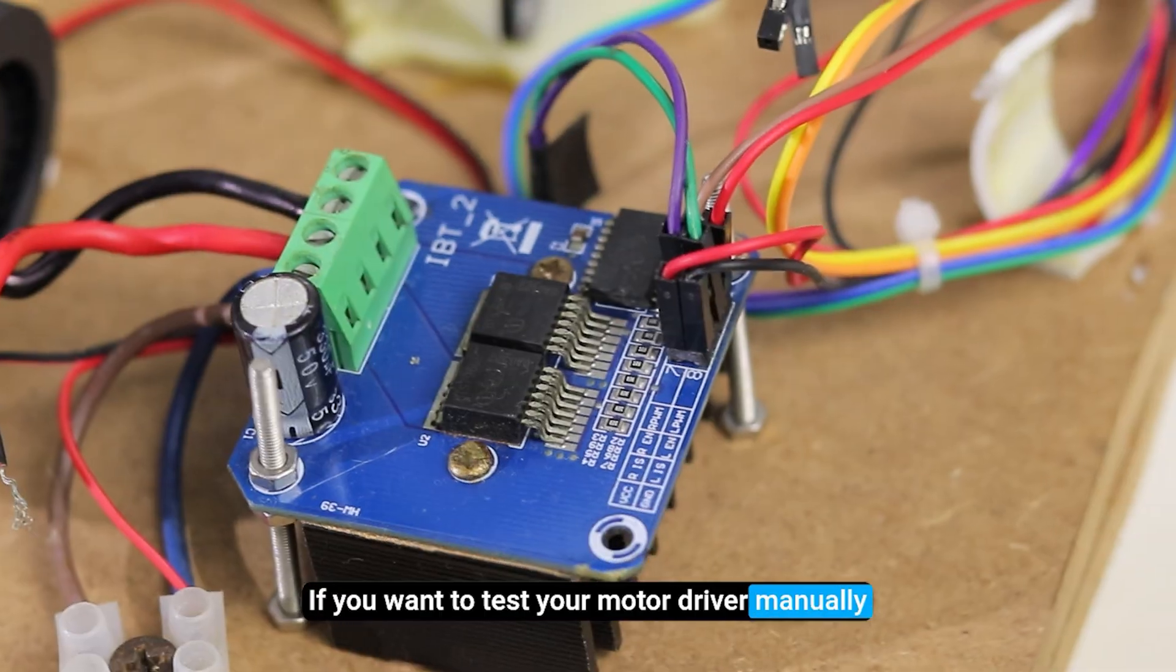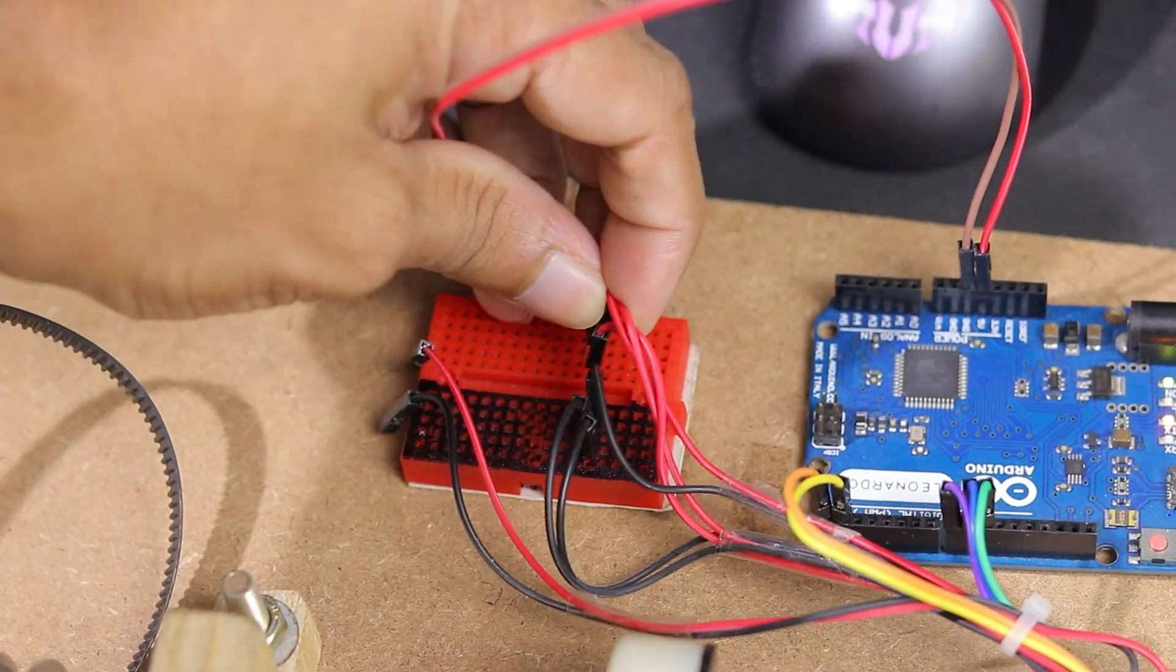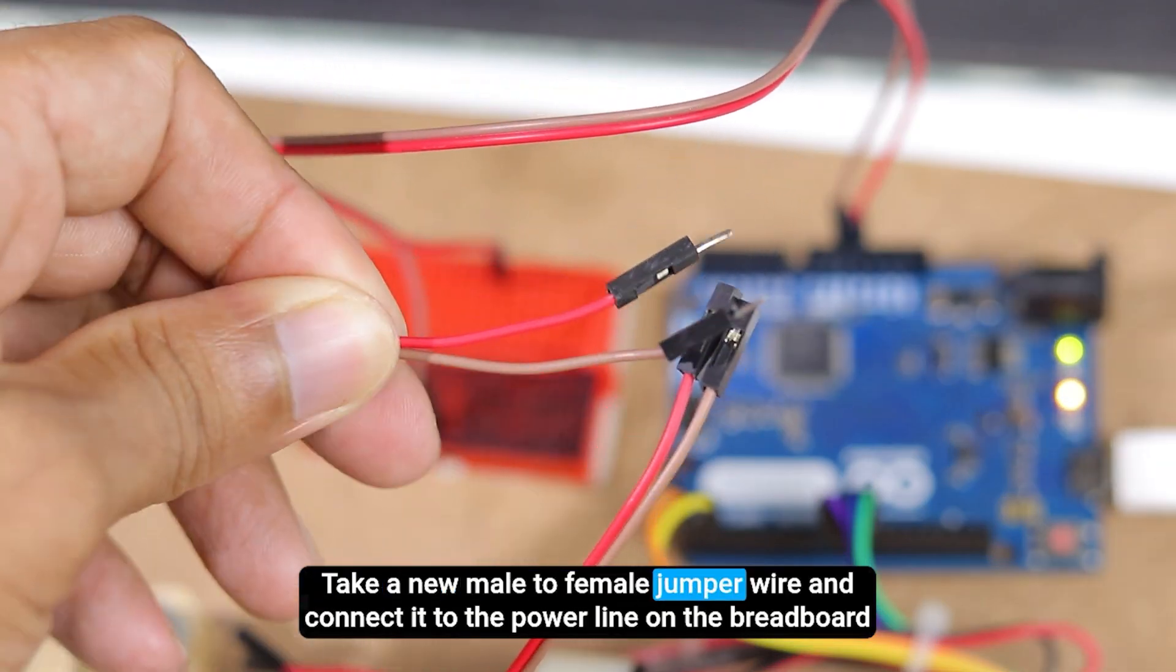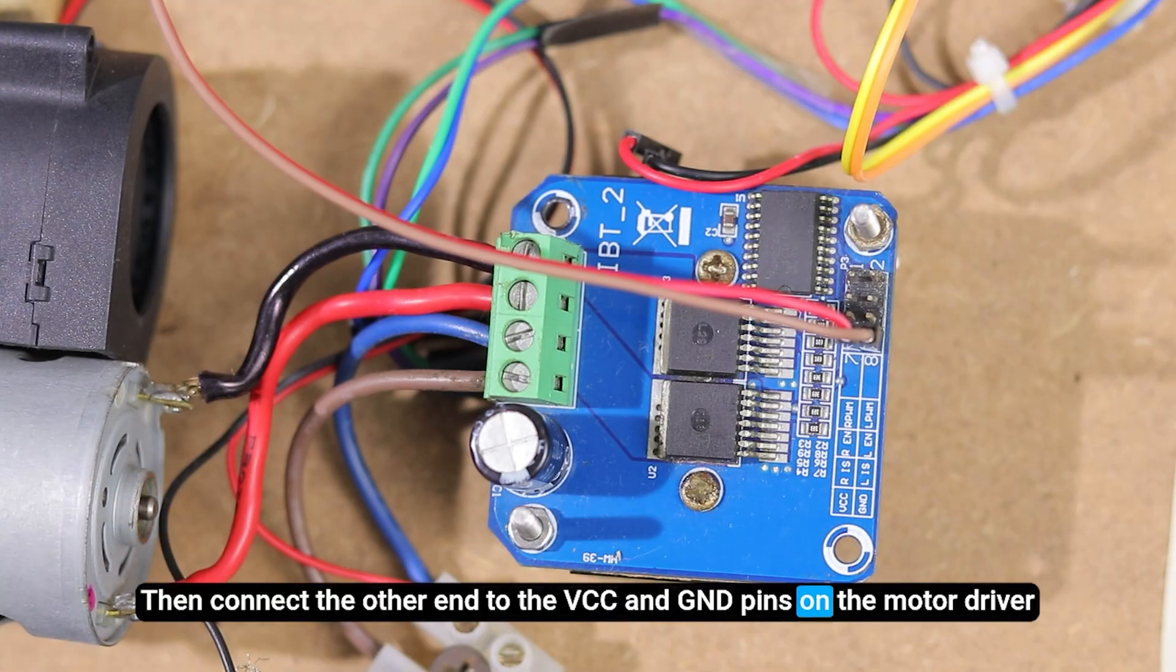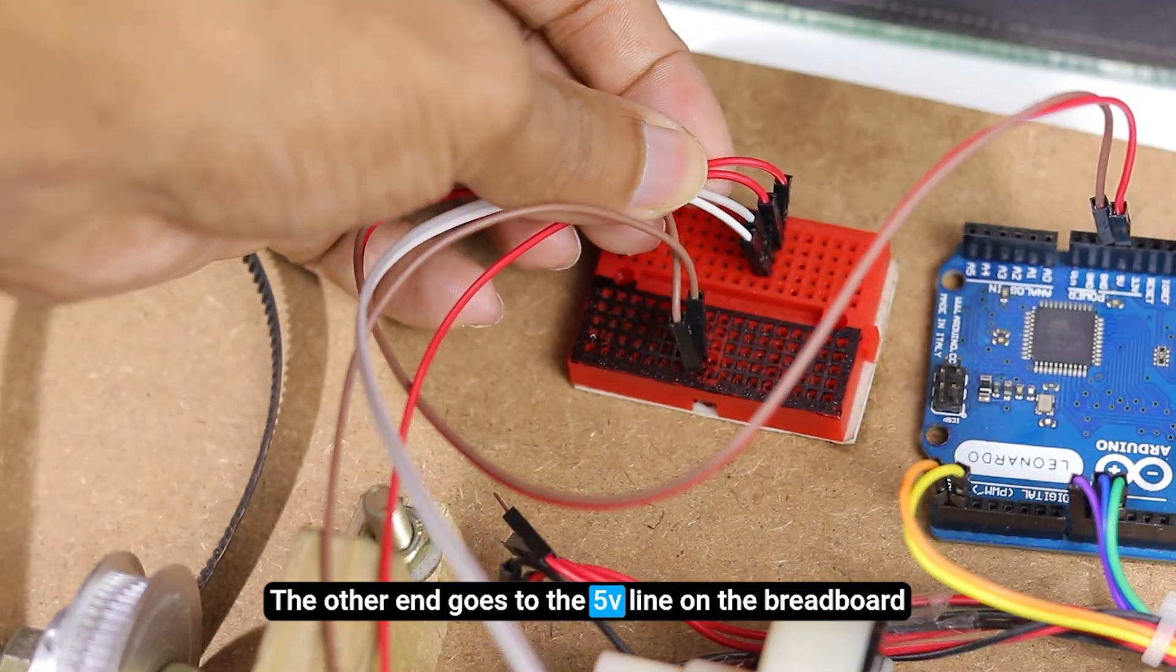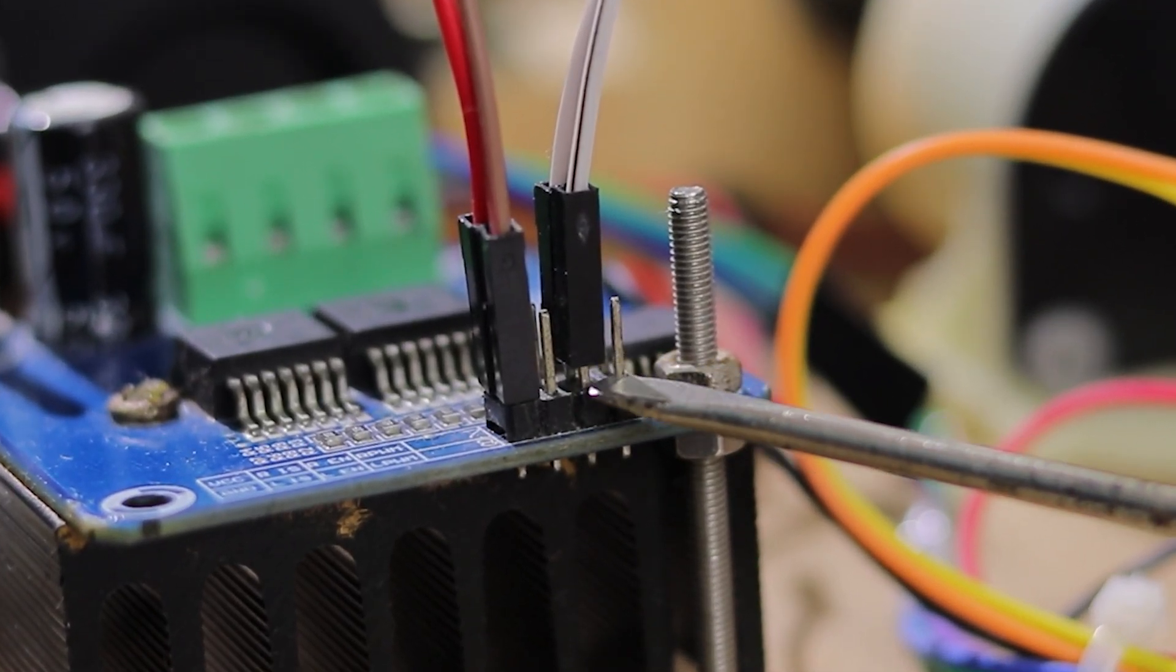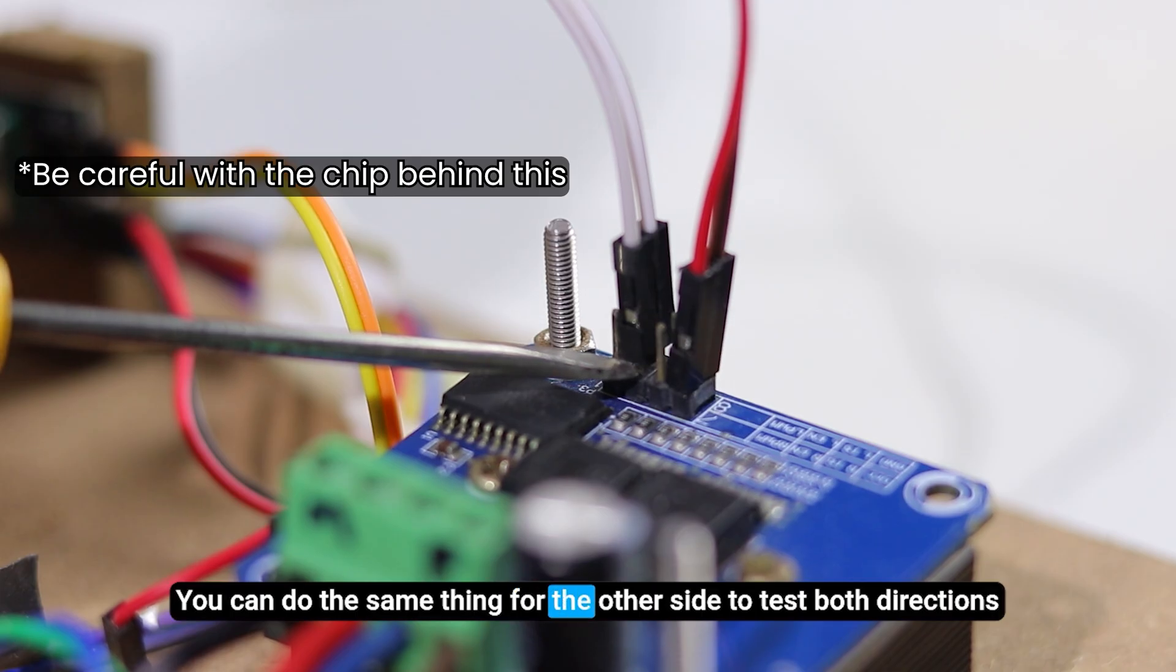If you want to test your motor driver manually, here's how to do it. First, remove all the existing connections from the driver and breadboard. Then, connect the Arduino power lines to the breadboard. Take a new male-to-female jumper wire and connect it to the power line on the breadboard. Then connect the other end to the VCC and GND pins on the motor driver. Take two new male-to-female jumper wires and connect them to the motor driver's enable pins. The other end goes to the 5V line on the breadboard. When you short the enable pin and PWM pin, the motor should start spinning. You can do the same thing for the other side to test both directions.